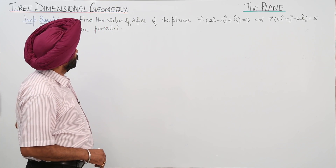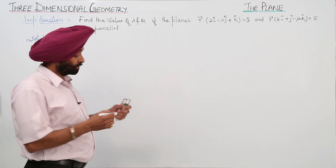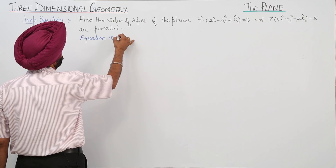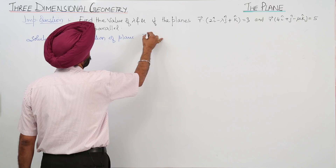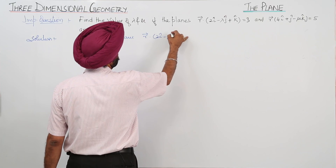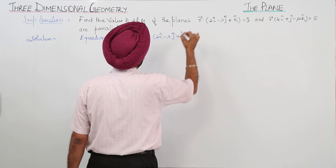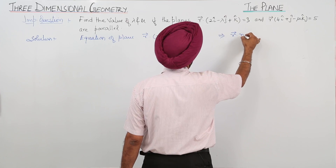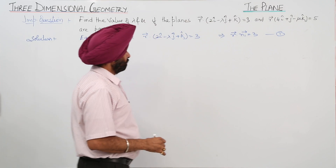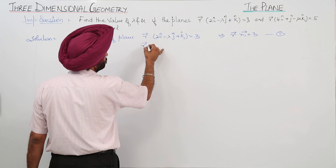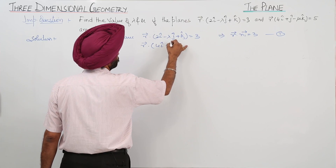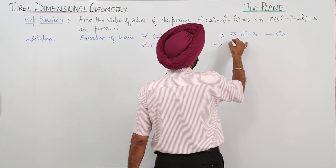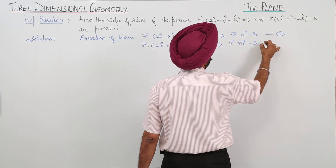We have to find the values for lambda and mu if the planes are parallel. The equation of plane one is vector r dot (2i cap minus lambda j cap plus k cap) equals 3, written as vector r dot vector n1 equals 3. The equation of plane two is vector r dot (4i cap plus j cap minus mu k cap) equals 5, written as vector r dot vector n2 equals 5.